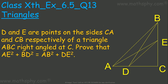D and E are points on the sides CA and CB respectively of triangle ABC, right angle at point C. Prove that AE square plus BD square is equal to AB square plus DE square.